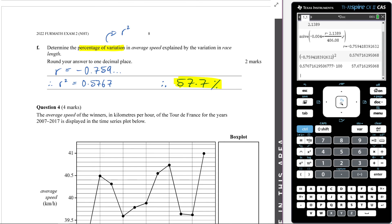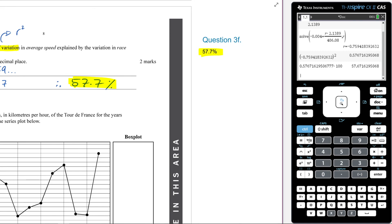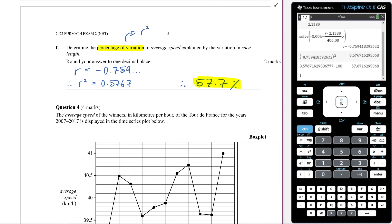57.7%. If we look at our examiner's report, 57.7% is my answer. So that is how I have approached question F there.